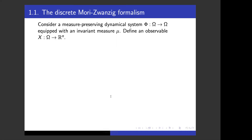Let me begin with a few definitions and notations to review the discrete Mori-Zwanzig formalism. Consider the discrete dynamical system given by map phi on the phase space omega, equipped with invariant measure mu. This is a natural representation of dynamical systems used as a discretization of ODEs or PDEs. I define a map x as the observable that takes the phase space into some n-dimensional real-valued component vectors. Typically, n is much smaller than the dimension of the phase space omega.